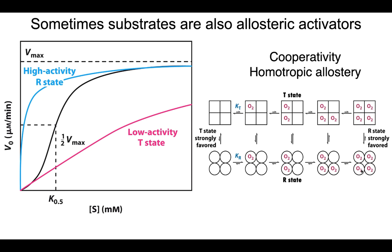This is called cooperativity or homotropic allostery. When you see this, you will see a very specific enzyme kinetics curve — a sigmoidal curve. The first part of the curve represents the low-activity T state, but as more substrate is added, the sites fill up and you shift toward the high-affinity, high-activity R state. This sigmoidal curve reflects elements of both the low-activity and high-activity states, and it tells us cooperativity and homotropic allostery are occurring.